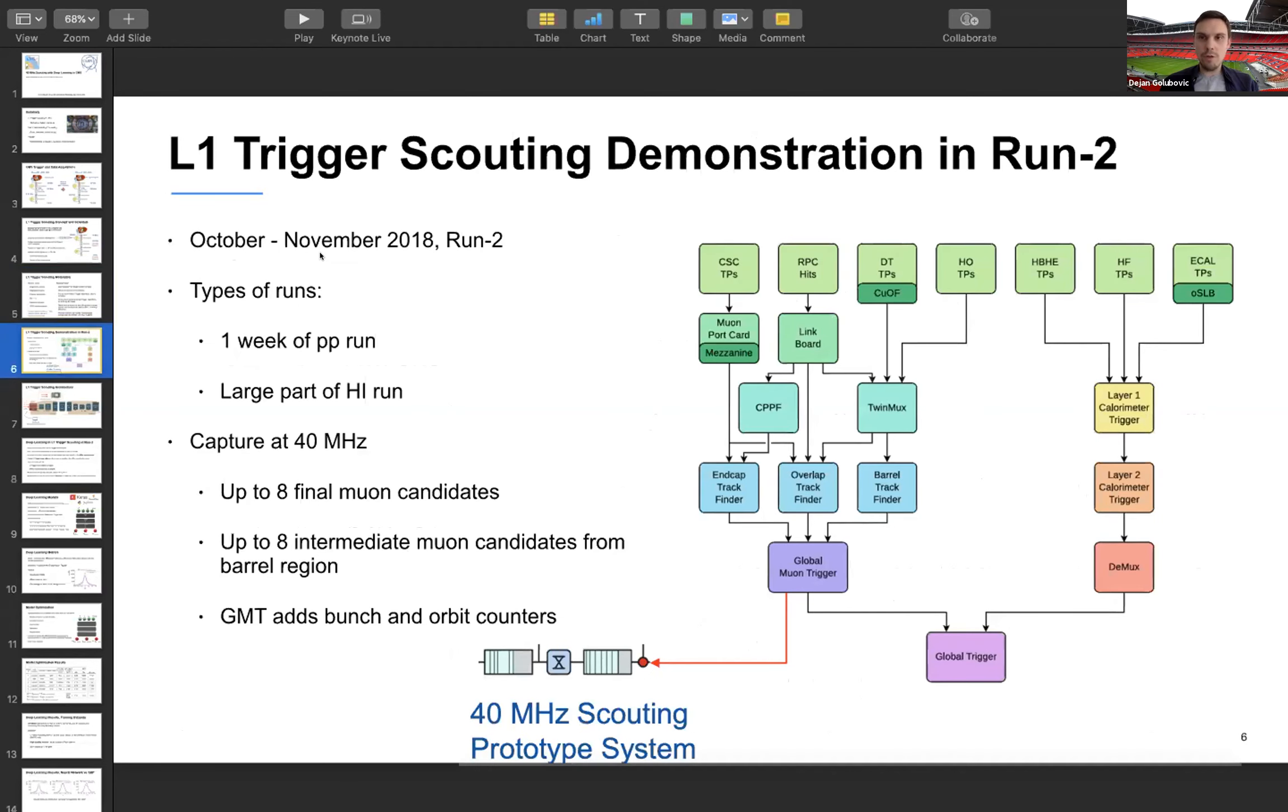So the previous demonstrator running in run two of the CMS had the goal to prove that it's possible to capture intermediate data at the bunch crossing rate and then have an analysis. Intermediate data in global muon trigger was captured and in the next demonstrator it's planned to include the data from layer two of calorimeter trigger and also Kalman filter barrel muon track finder data. For phase two for run four of the LHC it's planned to capture data from almost all components of the trigger system.